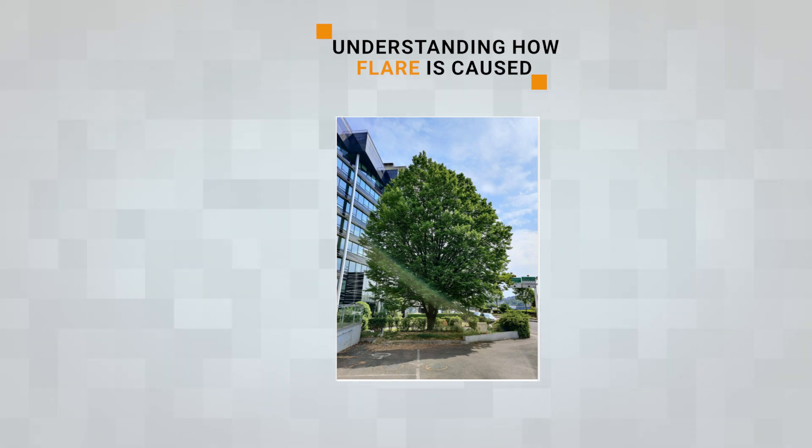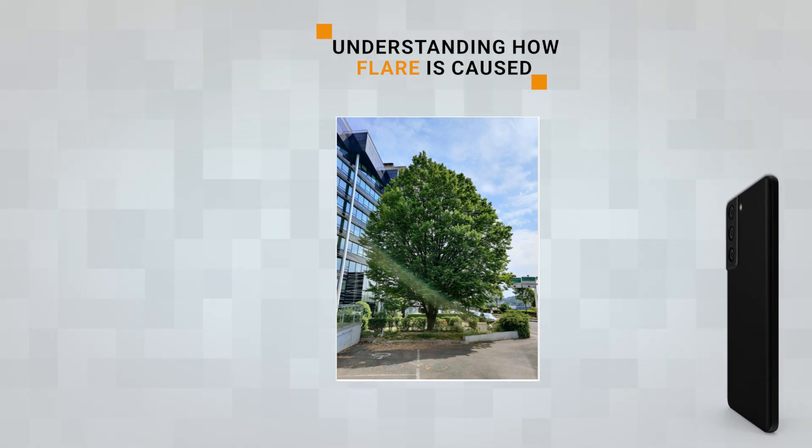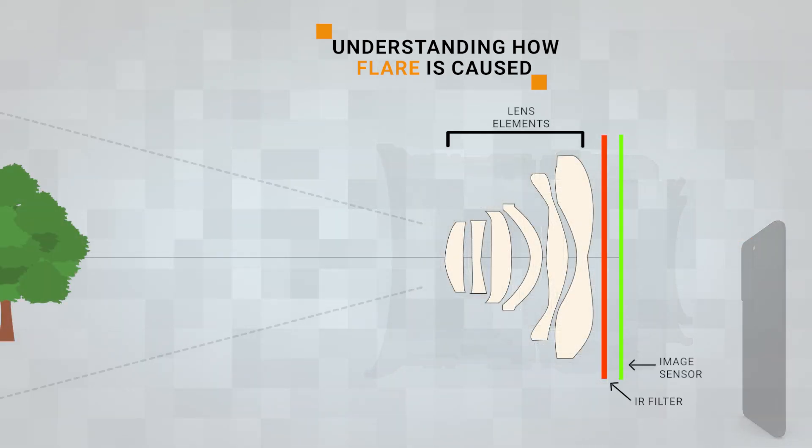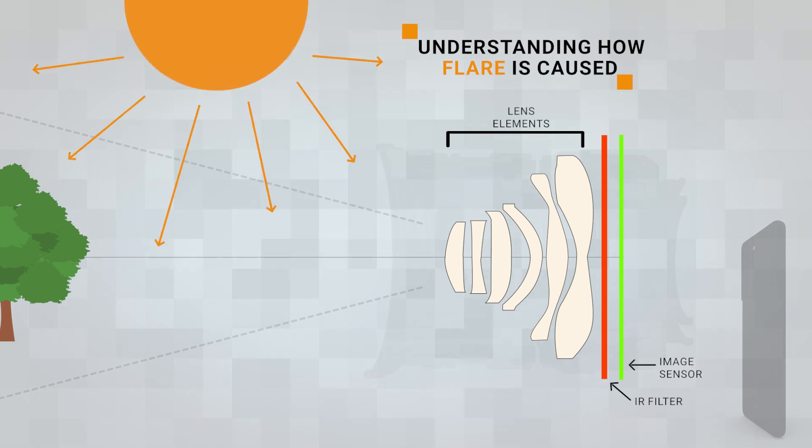Let's take an outdoor scene like this example here taken with a smartphone camera. We can see the inner layout of a typical smartphone camera made up of a series of lens elements with an infrared filter and the image sensor. We have the tree within the field of view of the camera and the Sun is illuminating the tree and camera. The optimal path for the light beam is seen here in yellow, which reaches the sensor to create the actual image.